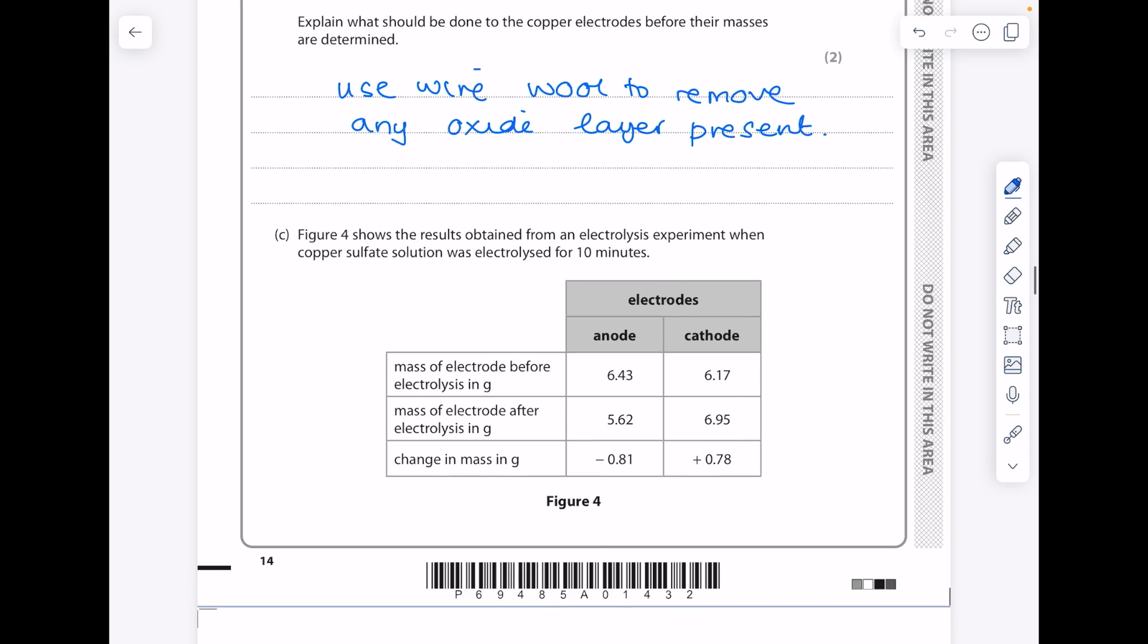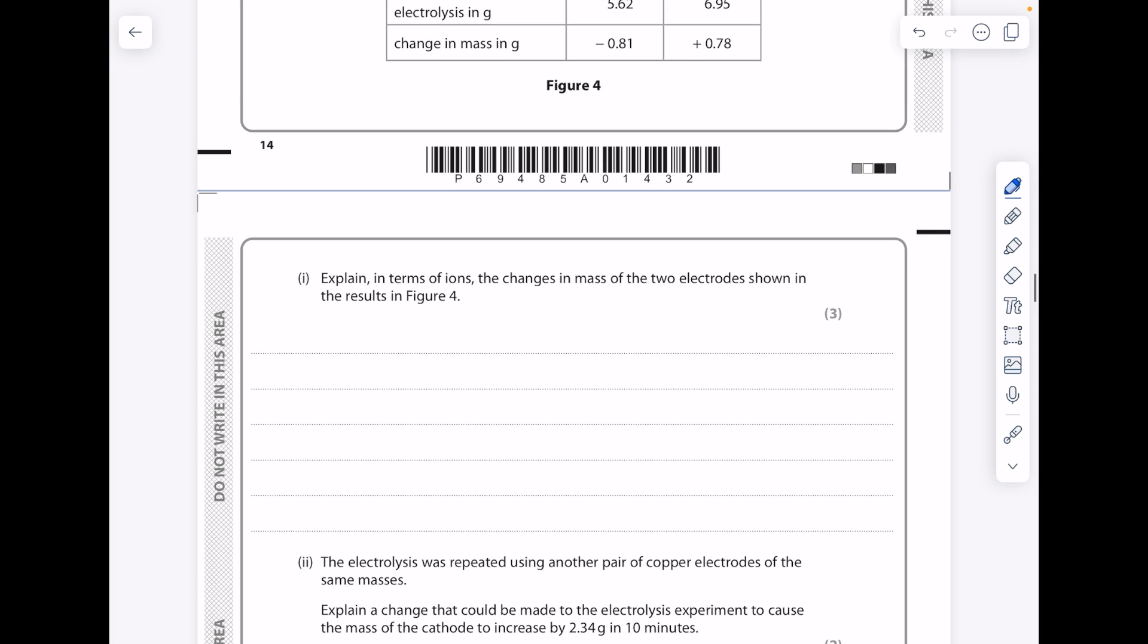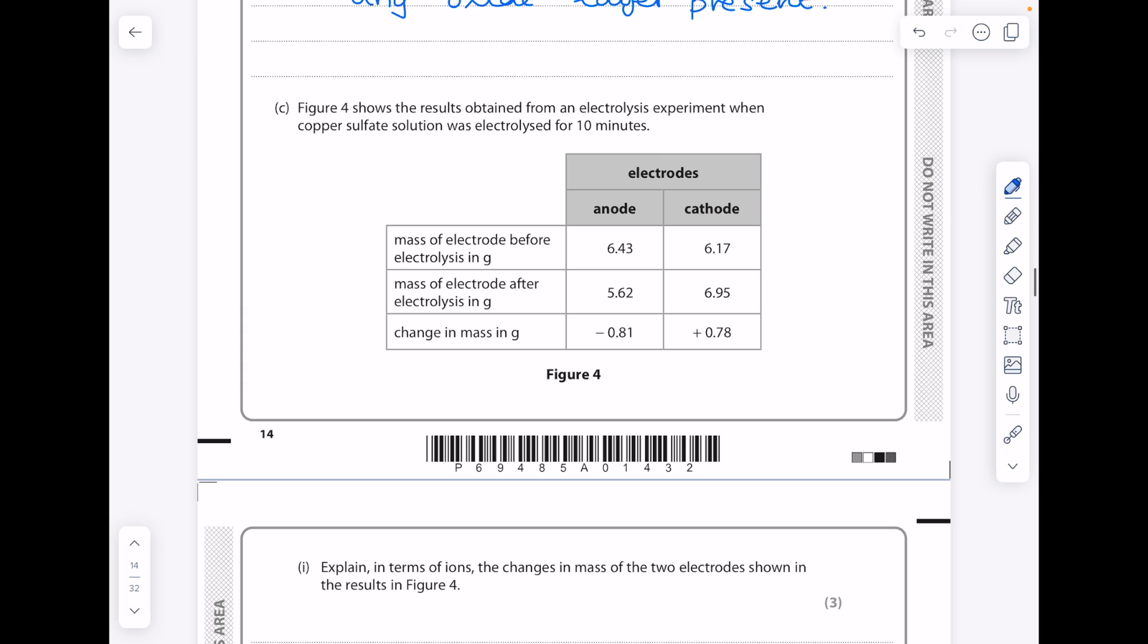Figure 4 shows the results obtained from an electrolysis experiment when copper sulfate solution was electrolyzed for 10 minutes. Explain in terms of ions the changes in mass of the two electrodes shown in the results in Figure 4. So before electrolysis, the anode had a mass of 6.43, and then afterwards it was 5.62, indicating a loss of -0.81.